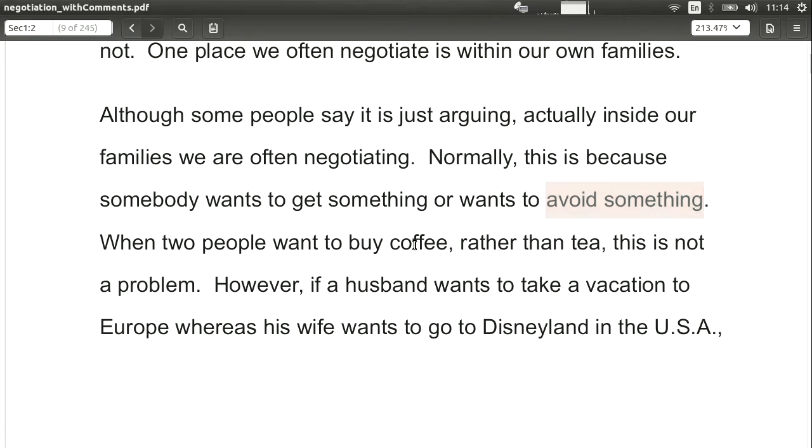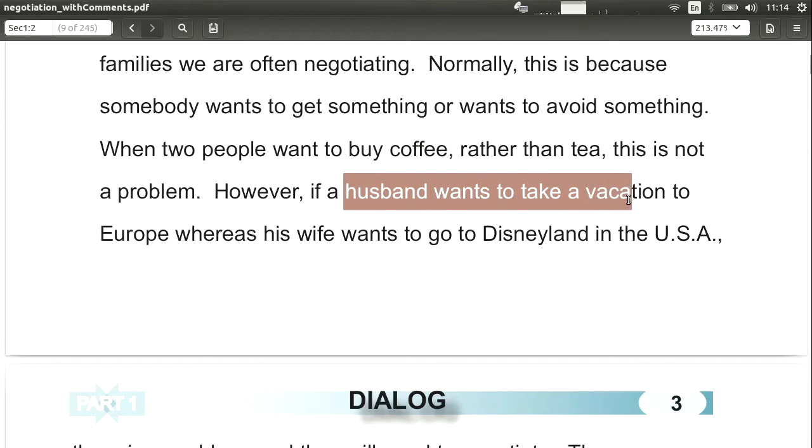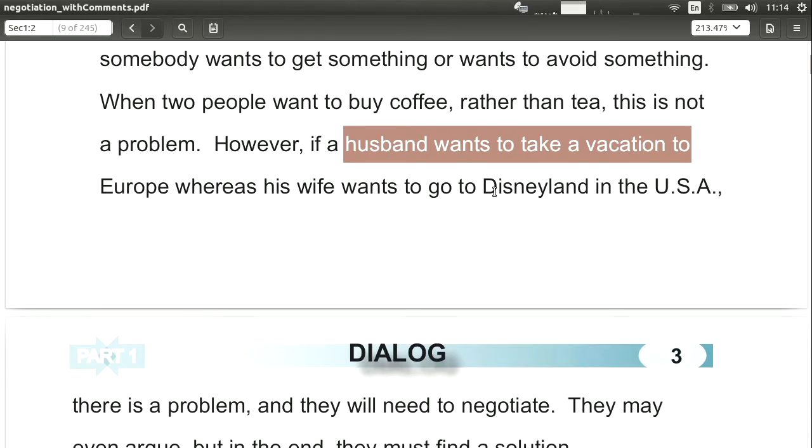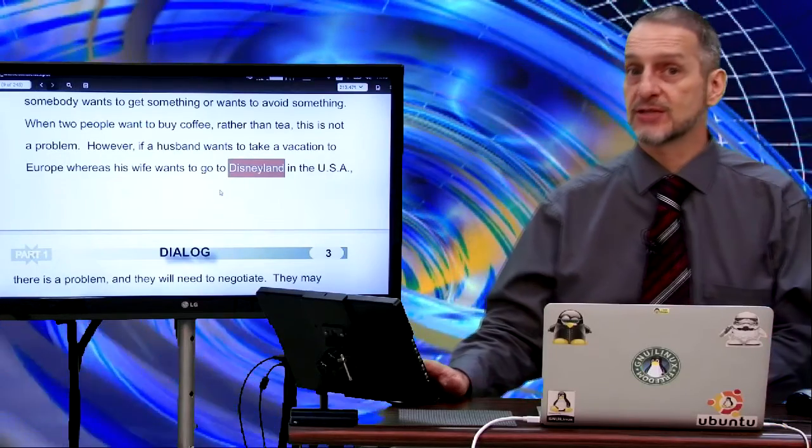So maybe you want to drink coffee, or you'd rather drink tea, or something like this. It can be a very small thing. Or, for example, in the dialogue in this chapter, what if you have a family, and the husband wants to go to vacation in Europe, but the children want to go to Disneyland, or the wife wants to go to Disneyland. So that's a vacation issue. I think we often have those kinds of situations.